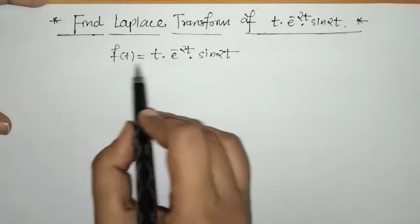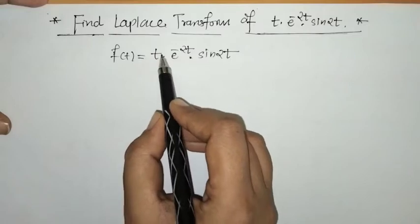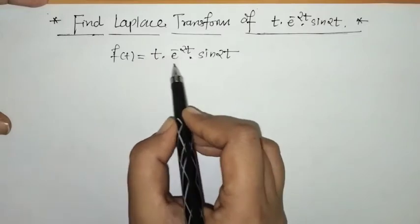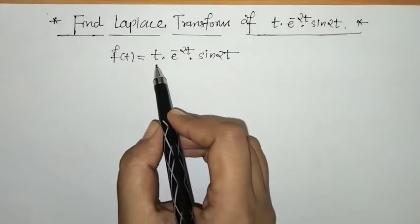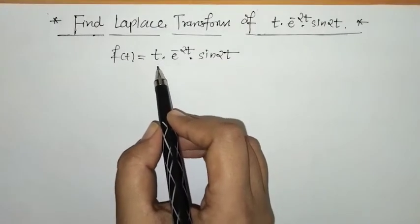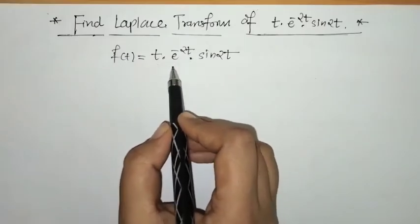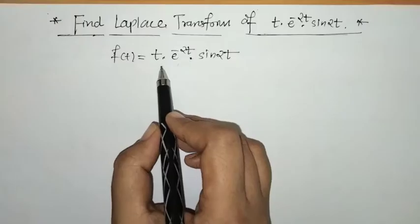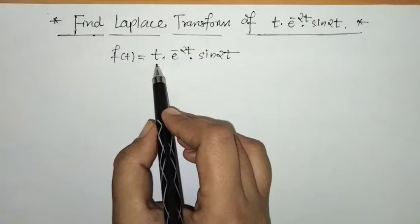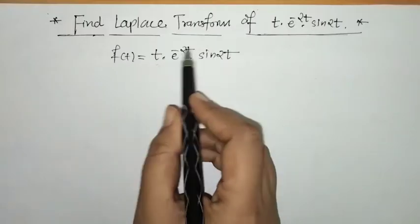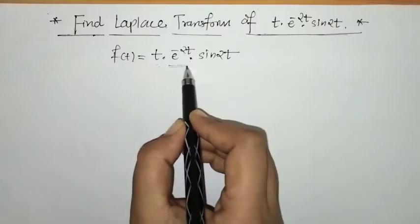We can check that here we have multiplication of three functions. We have multiplication by t and multiplication of this exponential function. That means here we have to apply the effect of multiplication by t and the first shifting property. First we have to apply the effect of multiplication by t, and when we find the Laplace finally, we have to apply the first shifting property.